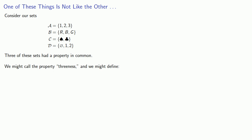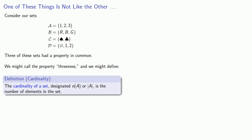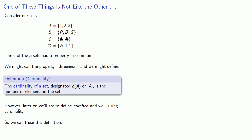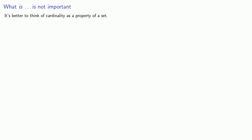The cardinality of a set, designated this way, is the number of elements in the set. However, later on we'll try to define number, and we'll be using cardinality in that definition — which means we can't use this definition, as that would again give us a circular definition. It's better to think of cardinality as a property of a set. What matters is not what cardinality is, but what cardinality does.